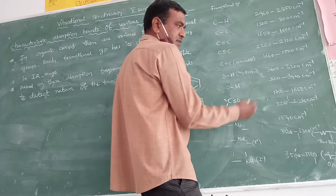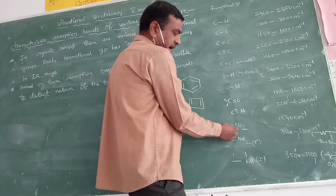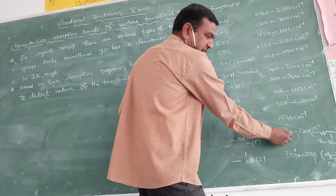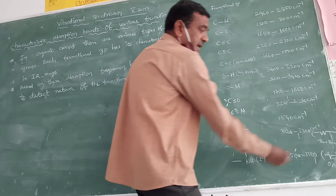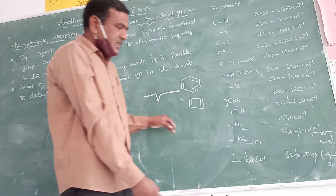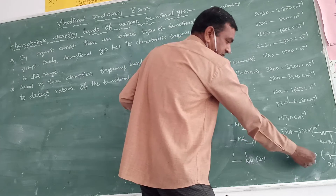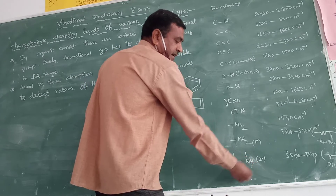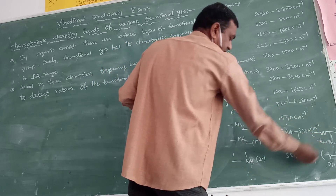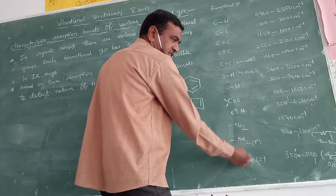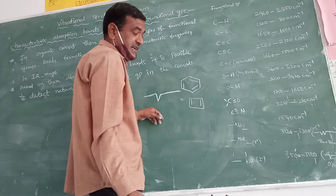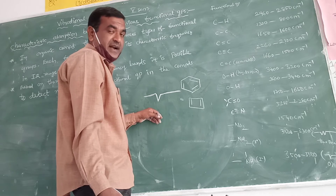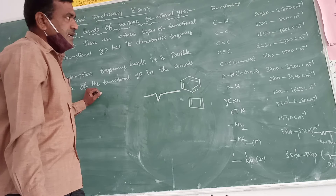The nitro group appears at 1540 cm⁻¹. For primary amines (NH₂), the absorption is at 3500 to 3300 cm⁻¹ and two peaks are shown because there are two hydrogens. For secondary amines, only one peak appears in the same region since there is only one hydrogen. Tertiary amines give no absorption peaks because no hydrogens are present.